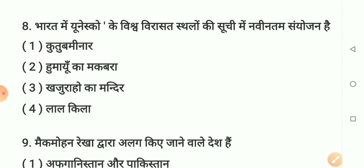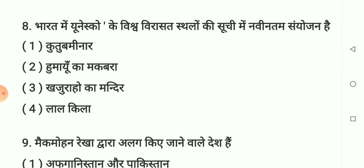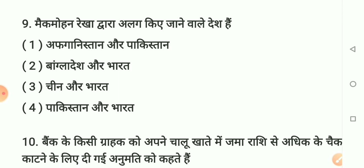Question number 8: Bharat mein UNESCO ke Vishwa Virasat Sthalon ki suchi mein naveenatam sanyojan kya hai? Options mein se sahi answer hai option 4 - Lal Qila. Bharat mein UNESCO ke Vishwa Virasat Sthalon ki suchi mein naveenatam sanyojan Lal Qila hai. Yaad rakhiye.